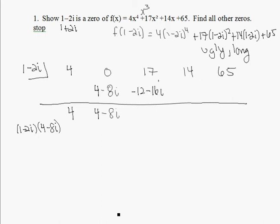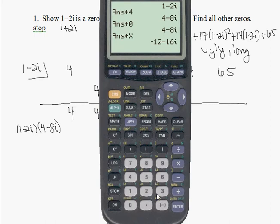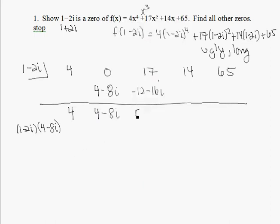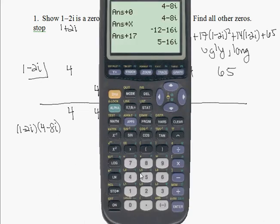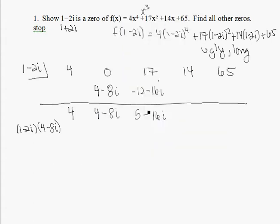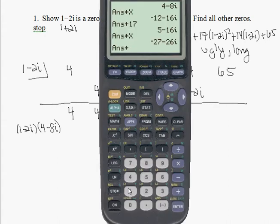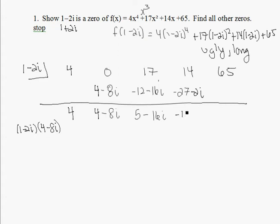I have to add 17 to that, so plus 17. 5 minus 16i. I need to multiply it by 1 minus 2i, so times x, which is negative 27 minus 26i. I add 14 to that. I get negative 13 minus 26i.